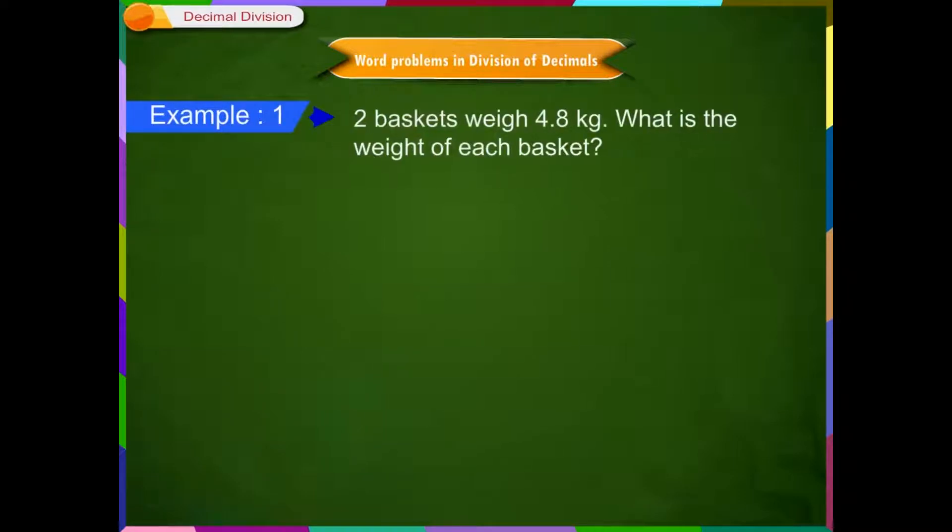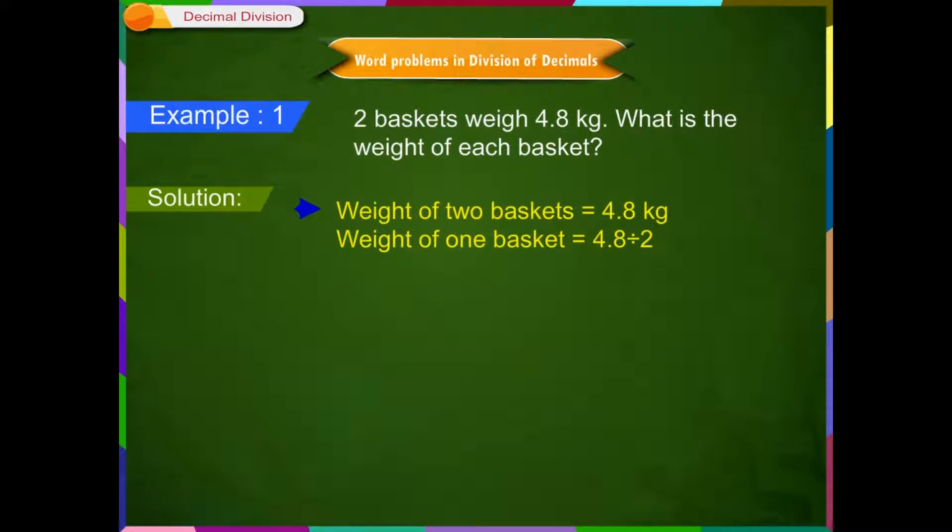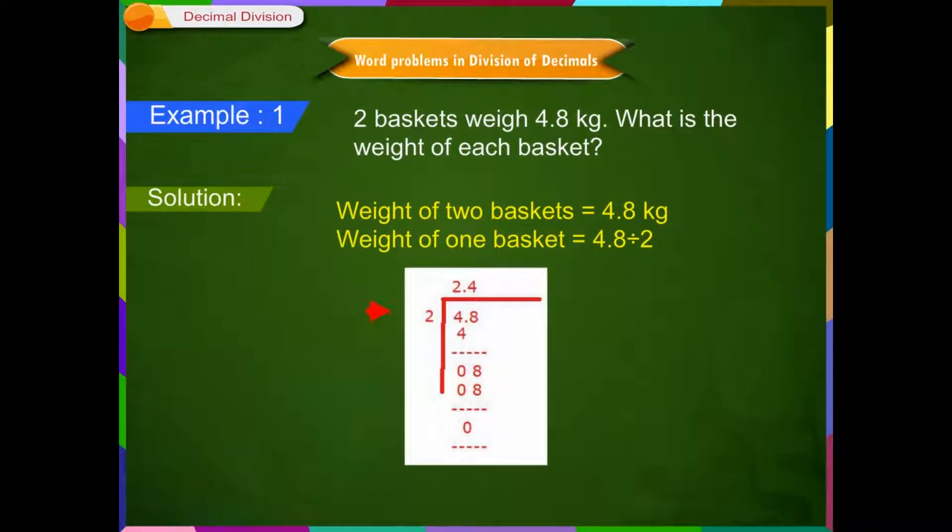Example 1: 2 baskets weigh 4.8 kg. What is the weight of each basket? Solution: Weight of 2 baskets is equal to 4.8 kg. Weight of 1 basket is equal to 4.8 divided by 2. Step 1: First, divide 4 by 2. The quotient is 2 and the remainder is 0.